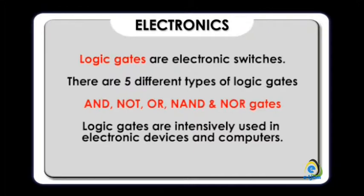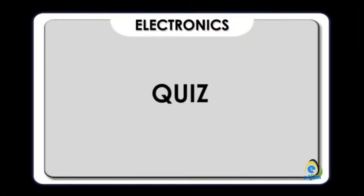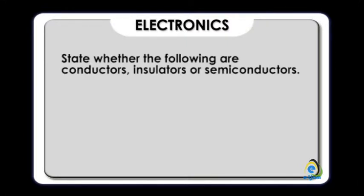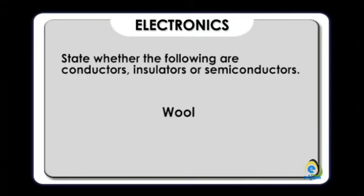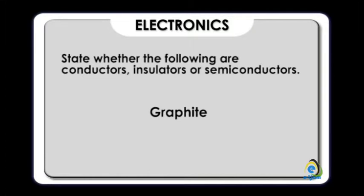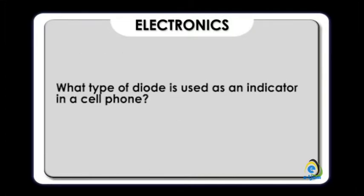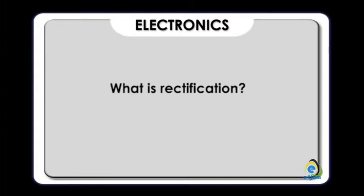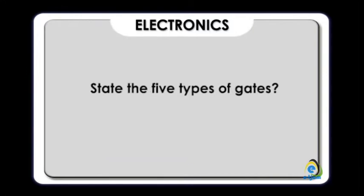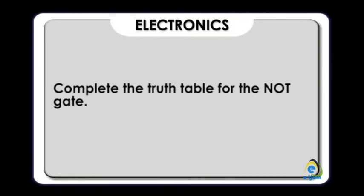It's time for a quiz. One: state whether the following are conductors, insulators, or semiconductors — copper metal, plastic, wool, germanium, graphite. What type of diode is used as an indicator in a cell phone? What is rectification? State the five types of gates. Complete the truth table for the NOT gate.